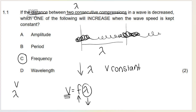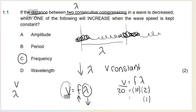Just remember that these two are only inversely proportional if speed is kept constant. For example, if speed is 20 and wavelength is 2, frequency must be 10. But if I decrease wavelength to 1, keeping speed constant at 20, frequency must be 20 to make the equation true. So wavelength decreased and frequency increased.